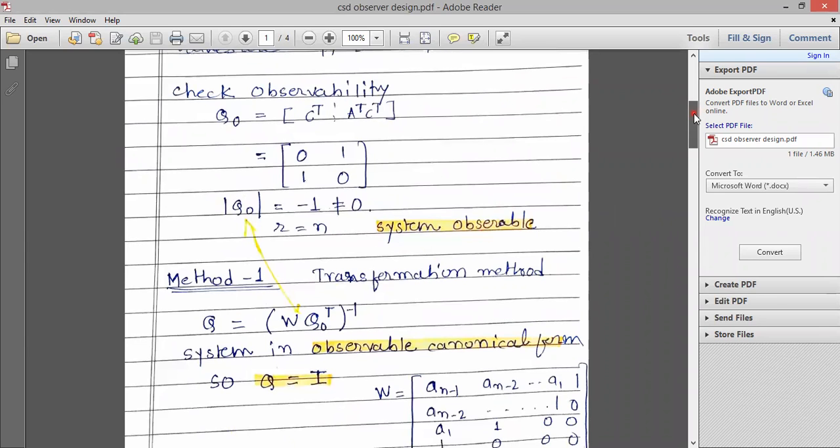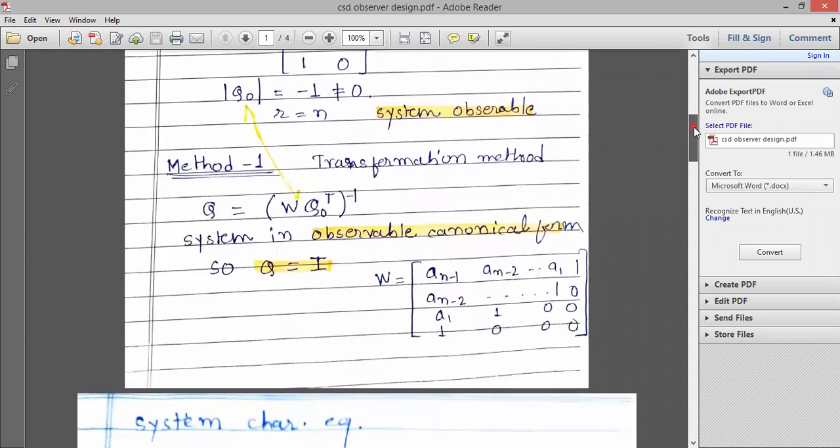Now, there are three methods to design the observer. So first method is a transformation matrix, so we require the Q matrix. So Q matrix is W into QO transpose inverse. W is a weight matrix. Using the characteristic equation of the state system, we get this coefficient and we can calculate the Q matrix.